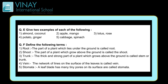Question F: define the following terms. Root — the part of a plant which lies under the ground is called root. Shoot — the part of a plant which grows above the ground is called the shoot. Trunk — the thick and strong part of a plant which grows above the ground is called stem or trunk.